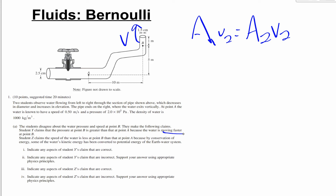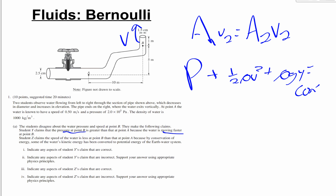Student Y also claims the pressure at B is greater because the water moves faster — that part is incorrect. Bernoulli's equation states: pressure plus one-half rho·v² plus rho·g·y equals constant. When velocity increases, there must be a corresponding decrease in pressure and/or height. Since height is also increasing from A to B, the pressure at B must actually decrease.